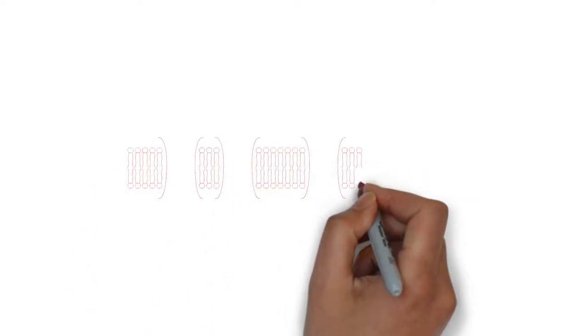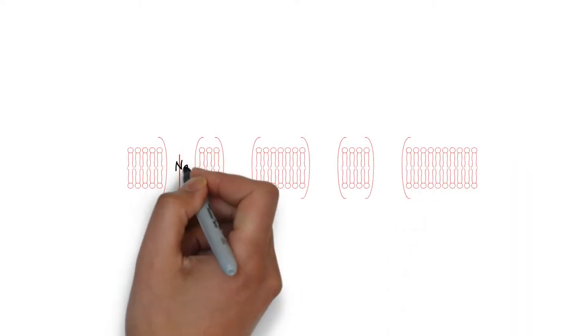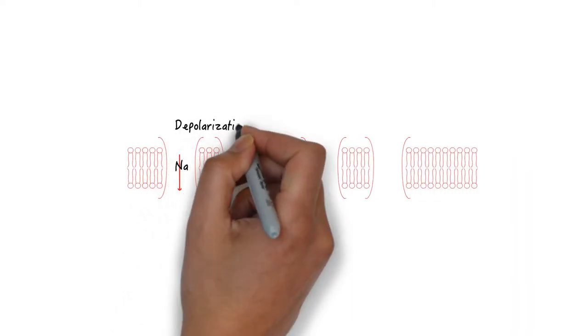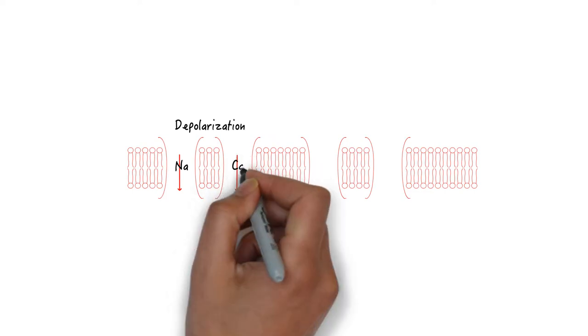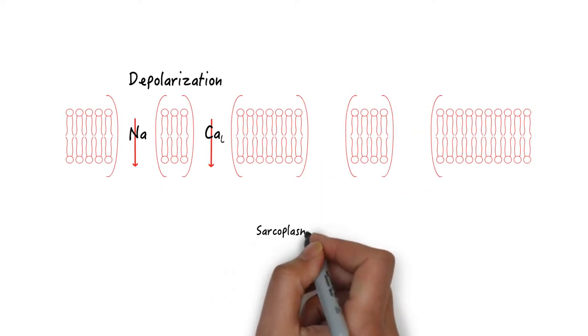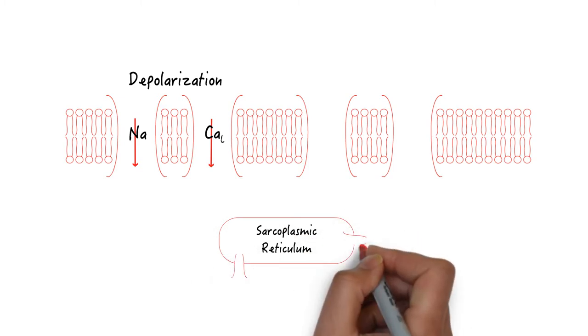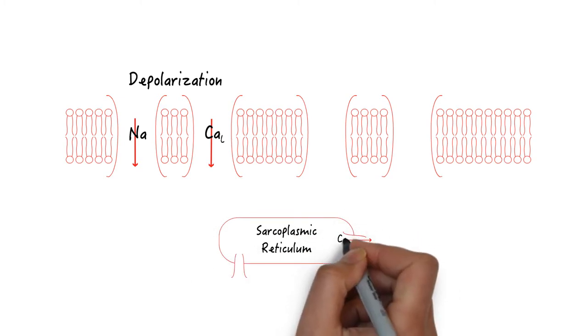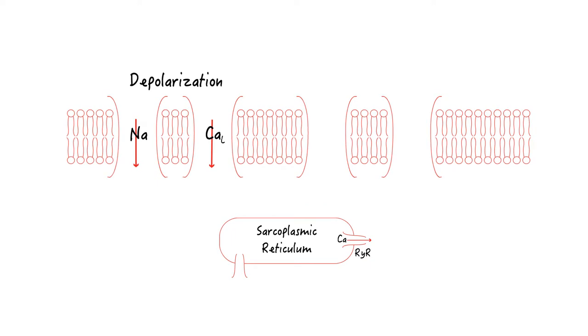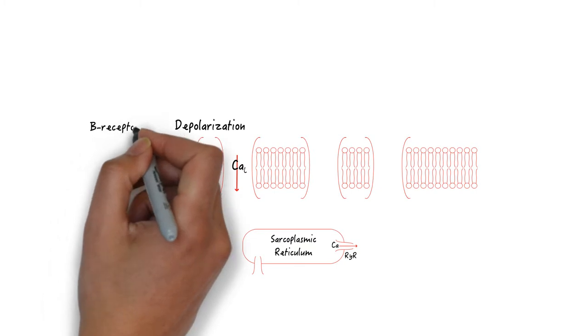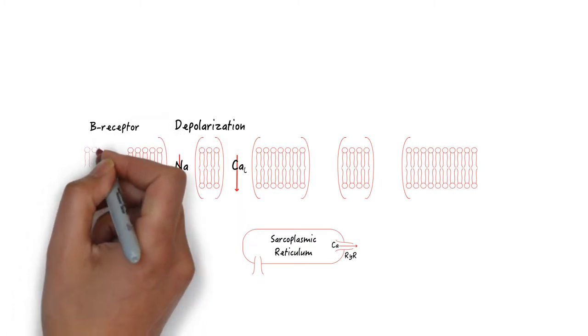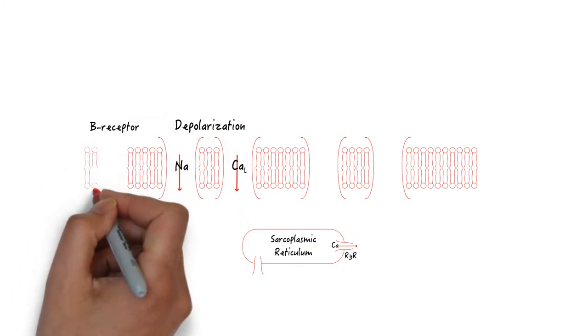As a primer, this is a very basic schematic representation of a non-pacemaker myocyte. Sodium channels facilitate depolarization, which cause calcium to flux in as well. The elevated intracellular calcium triggers the ryanodine receptors on the sarcoplasmic reticulum to release stored calcium. Calcium causes myocardial contraction.